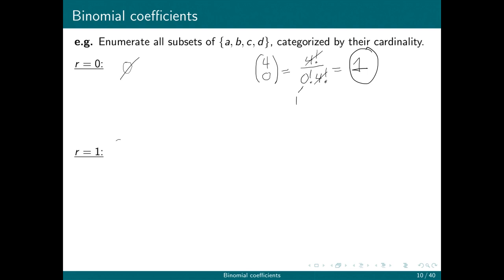r choose 1. Well, this is all the subsets that have 1 element. So there's {a}, there's {b}, there's {c}, and there's {d}. All right, there's 4 of those. So 4 choose 1 had better be equal to 4.